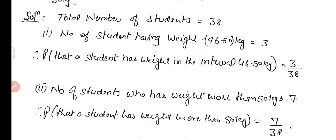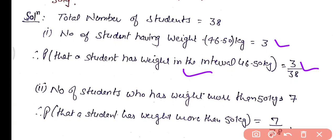Total number of students is 38. The number of students with weight in the interval 46 to 50 kg equals 3. So the probability that a student has weight in the interval 46 to 50 kg equals 3 upon 38. Similarly, the number of students with weight more than 50 kg equals 7, so the probability is 7 upon 38.